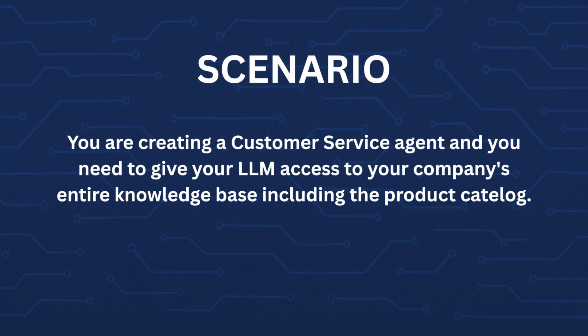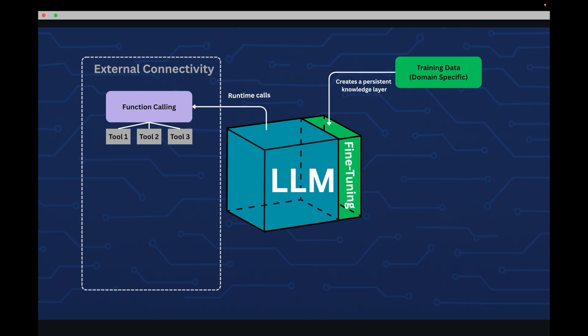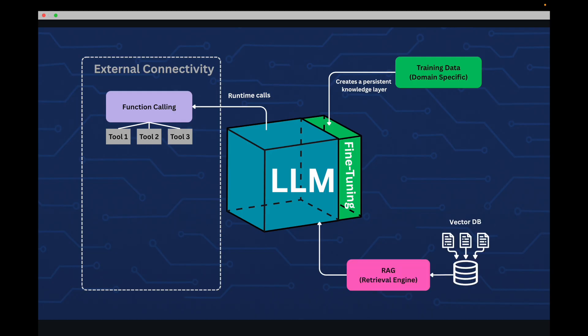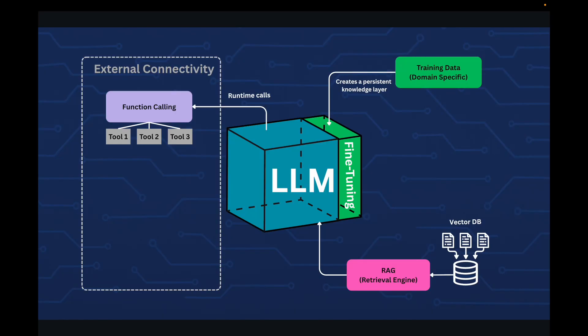We can use function calling when you need real-time data or actions, want to connect to specific APIs or tools, or need dynamic interactive capabilities from your LLM. Now assume you are creating a customer service agent and need to give your LLM access to your company's entire knowledge base including the product catalog. Fine-tuning would be impractical here because this information frequently changes. RAG solves this by connecting your LLM to a dynamic knowledge base — instead of storing information in the model itself, RAG retrieves relevant information just when it is needed, providing access to domain-specific information that is always up-to-date and is cost-effective for large knowledge bases.